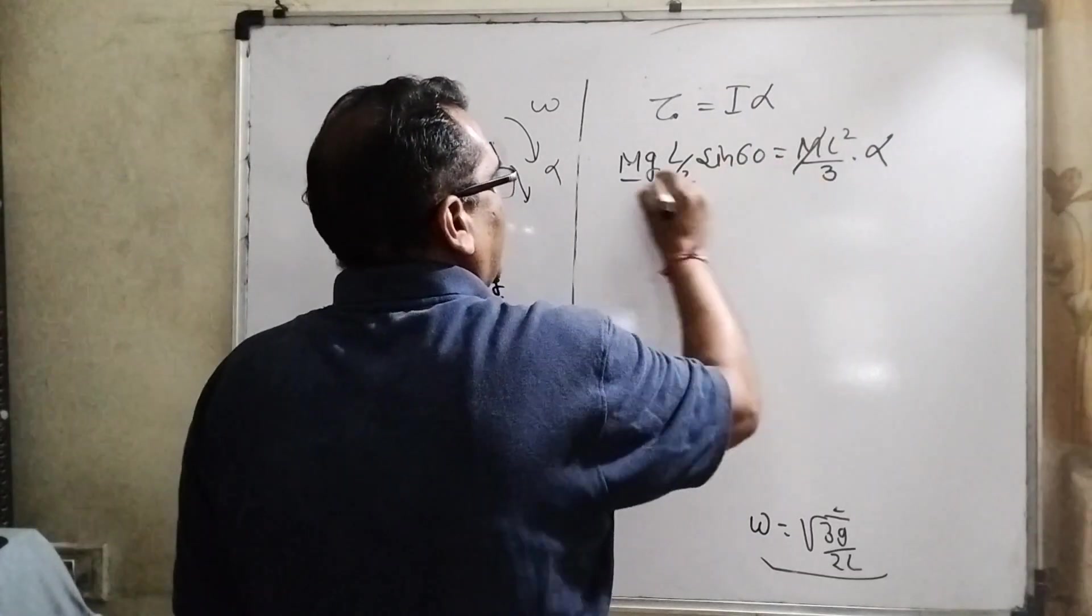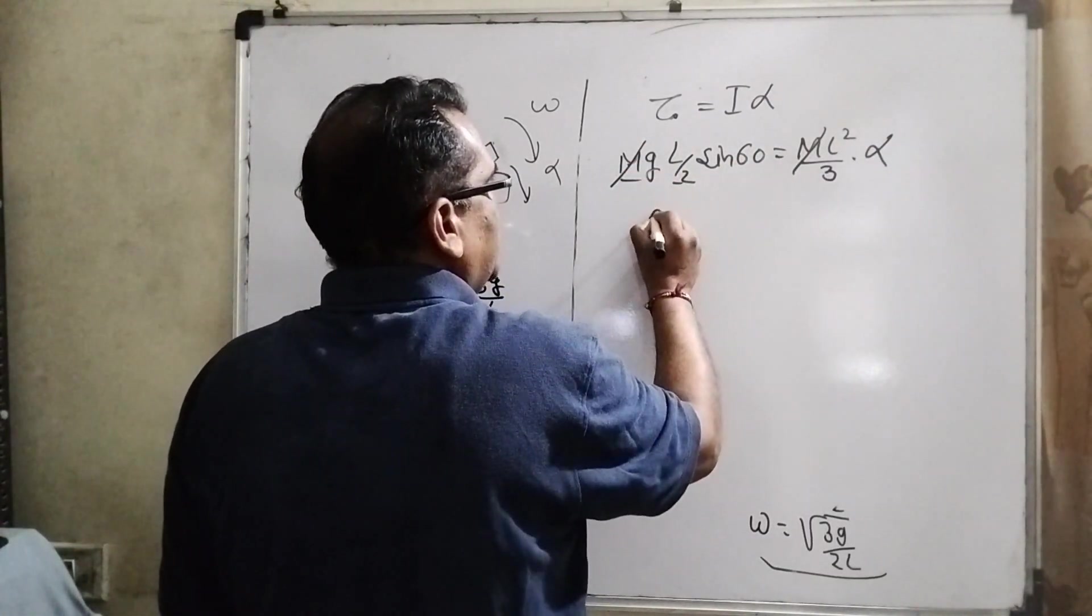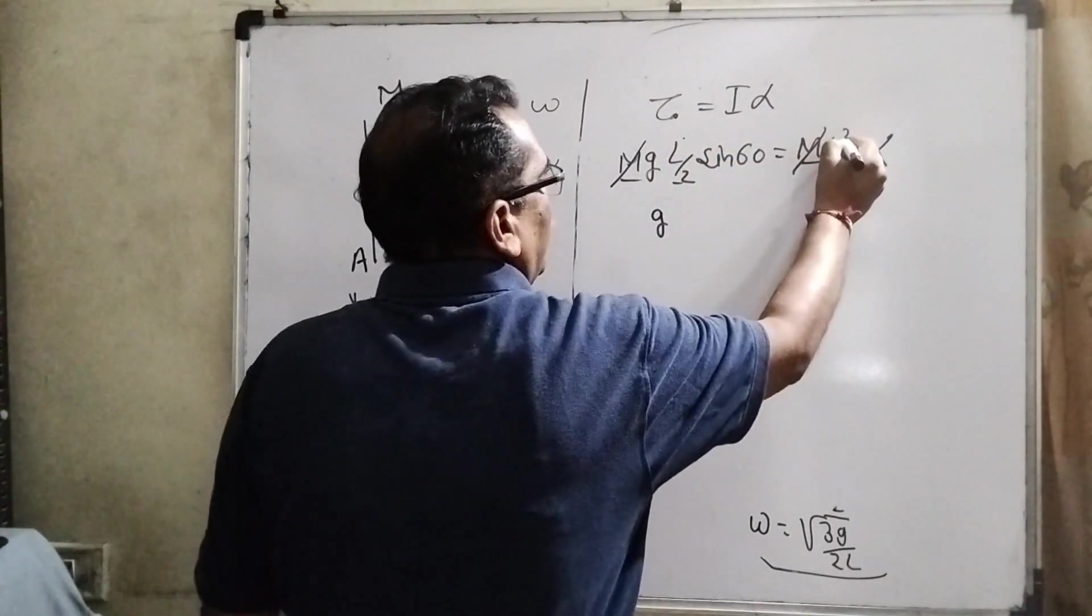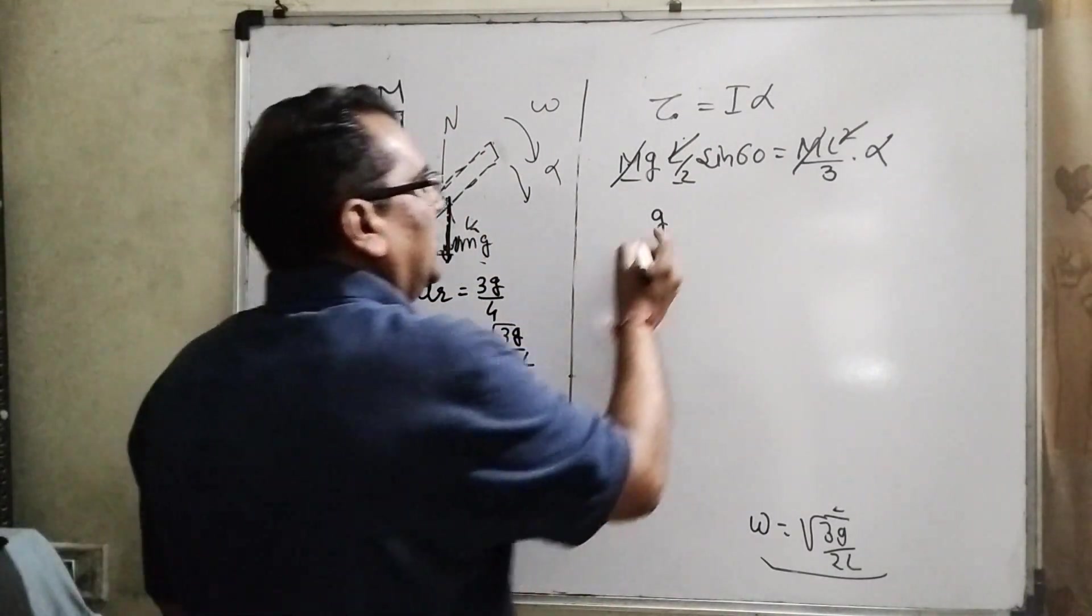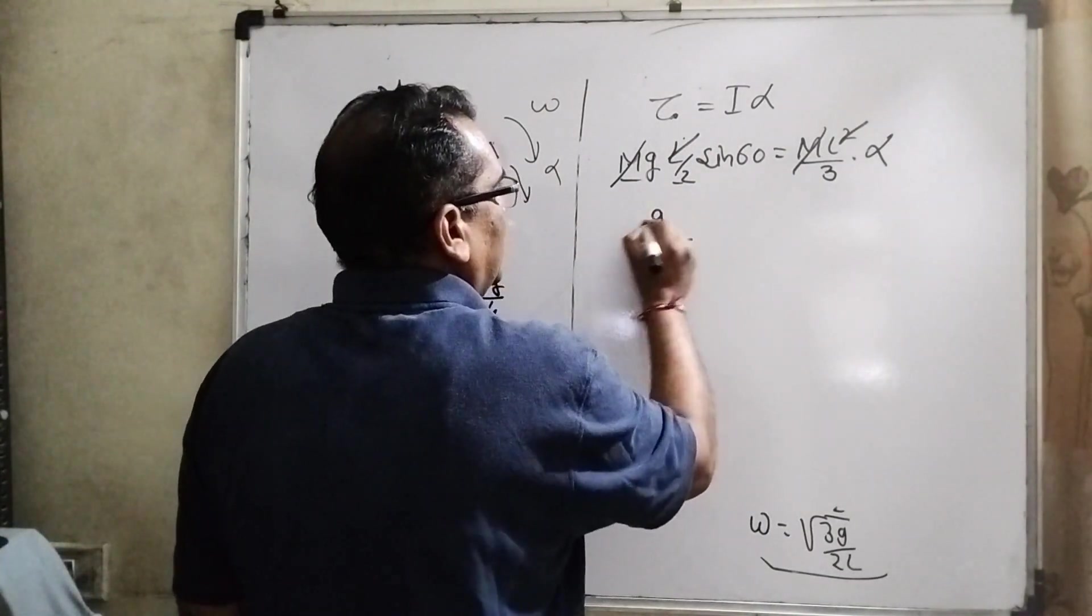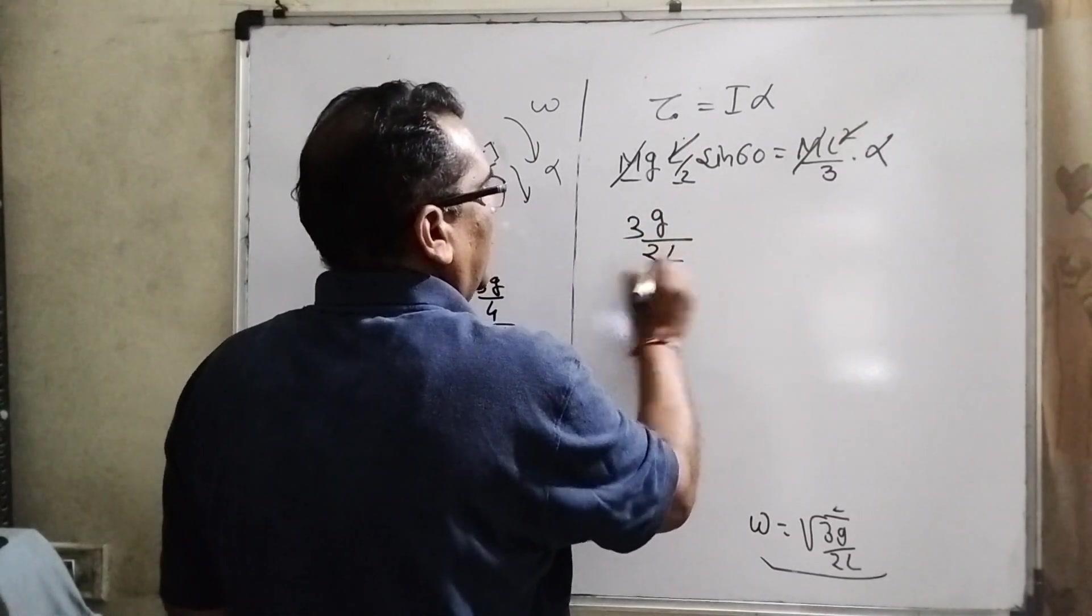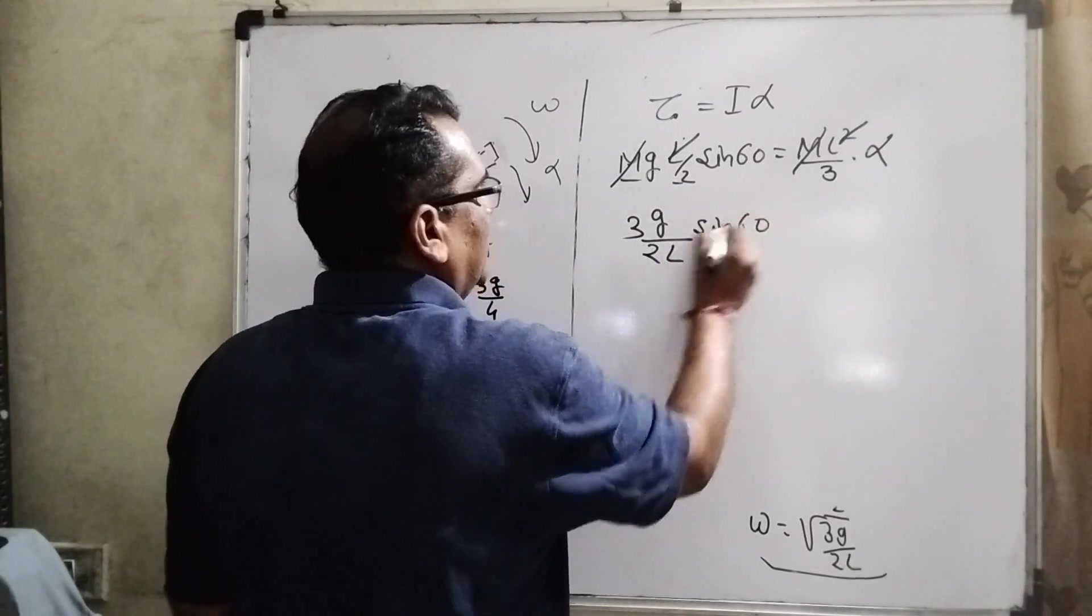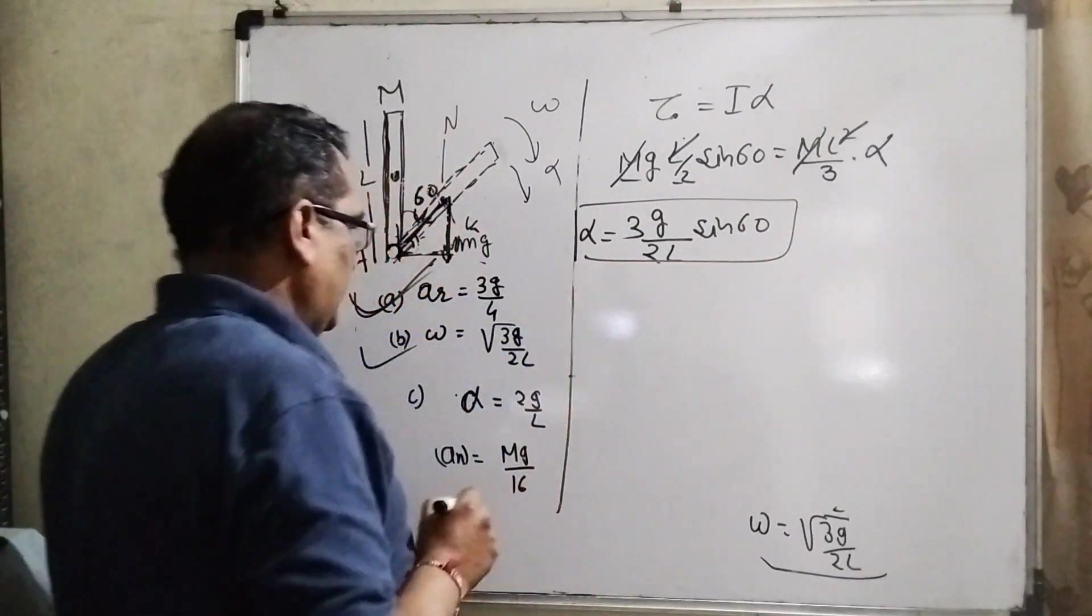What is the I at the end of the hinge? M L squared by 3 and alpha. M, M cancel out, and g, this is 1, L cancel out. 1 L is remaining. Here 3g by 2L sin 60 equal to alpha.